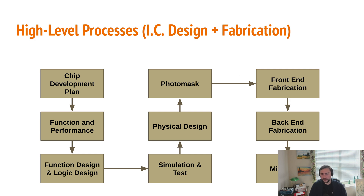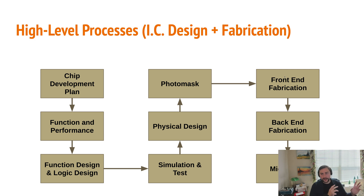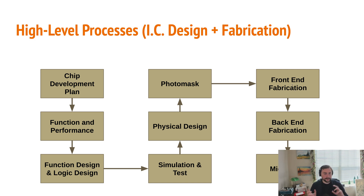With our photomask, we do our front-end fabrication, which is basically all the steps to go from a blank wafer — a piece of silicon — all the way through until we have our wafer covered with our circuits. That's our front-end fabrication, typically made up of our FEOL, our front end of line processes, and our back end of line processes.